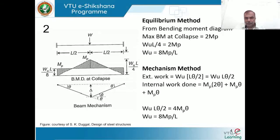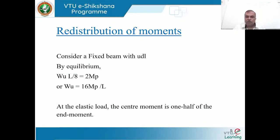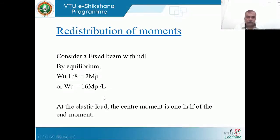For the fixed beam under UDL, W = 8mp/L, or equivalently mp = WL/8. The intensity of load w multiplied by span gives the total load W. With W = 16mp/L for UDL (where W is total load), the maximum bending moment is WL/8 — but here W is total load, not intensity, so intensity must be multiplied by span.